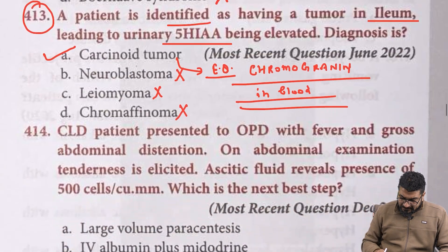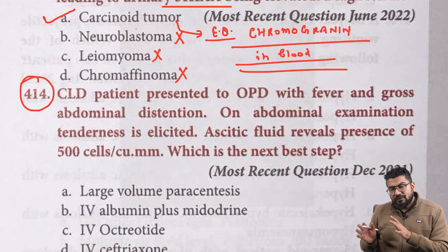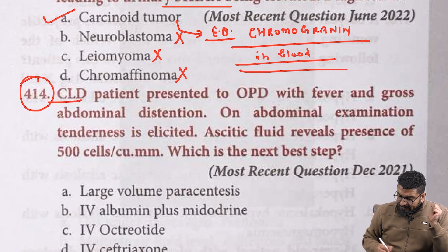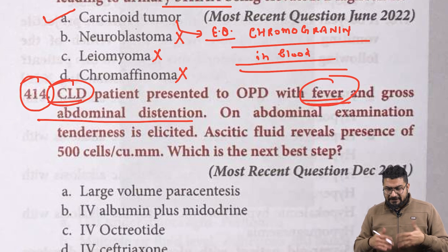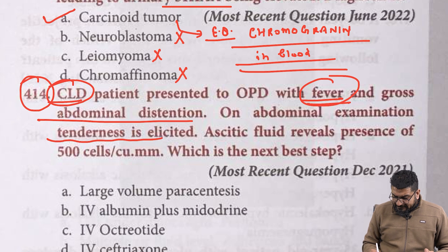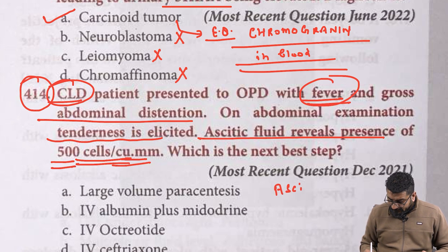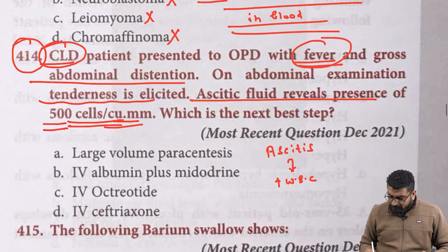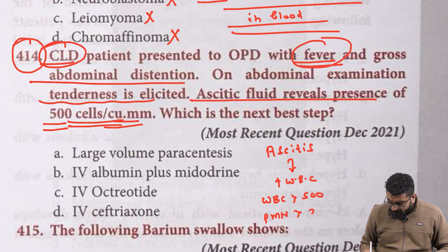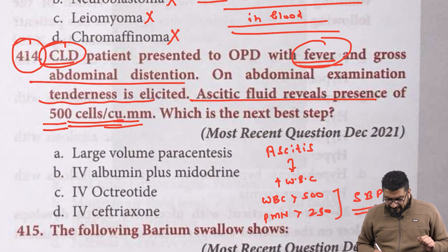Next: a CLD patient presents to OPD with fever, gross abdominal distension indicating ascites, and tenderness on abdominal examination. Ascitic fluid reveals 500 cells per cubic mm. When ascitic fluid WBCs are more than 500, and polymorphoneutrophils are more than 250, this is a case of spontaneous bacterial peritonitis (SBP).